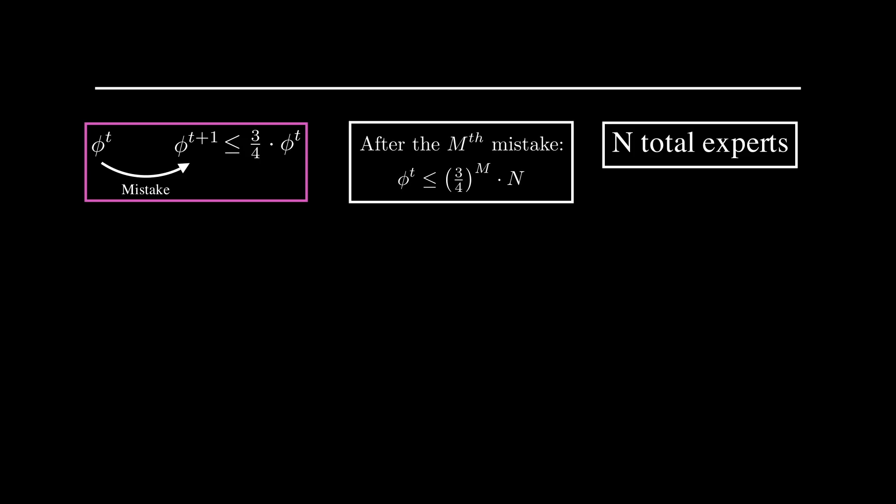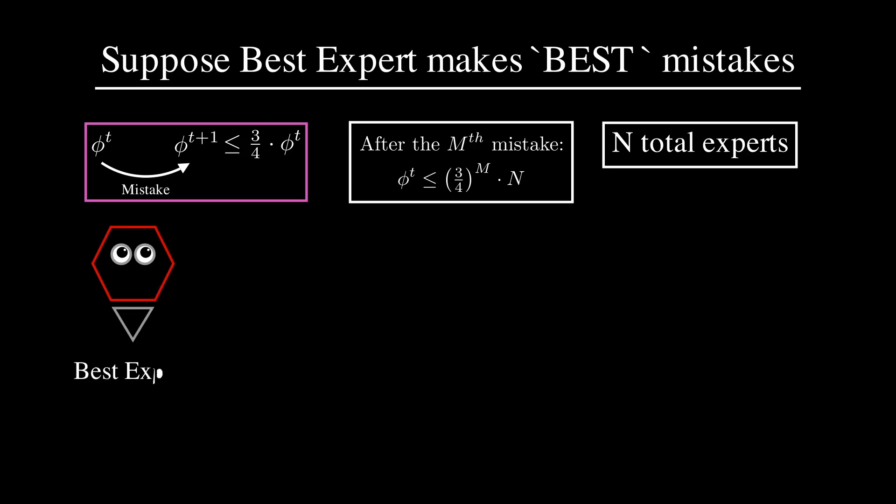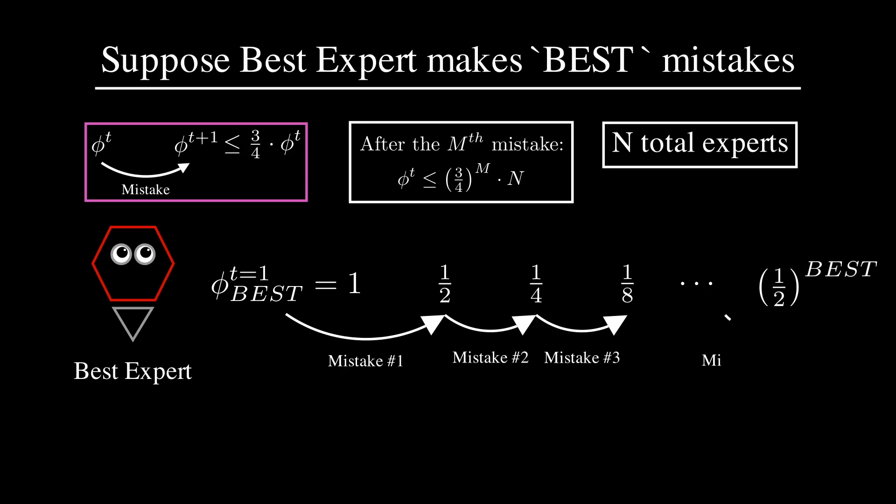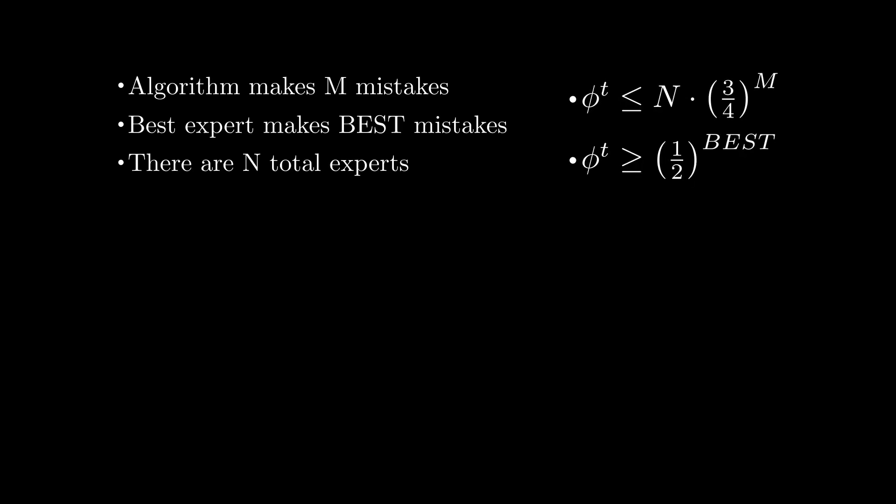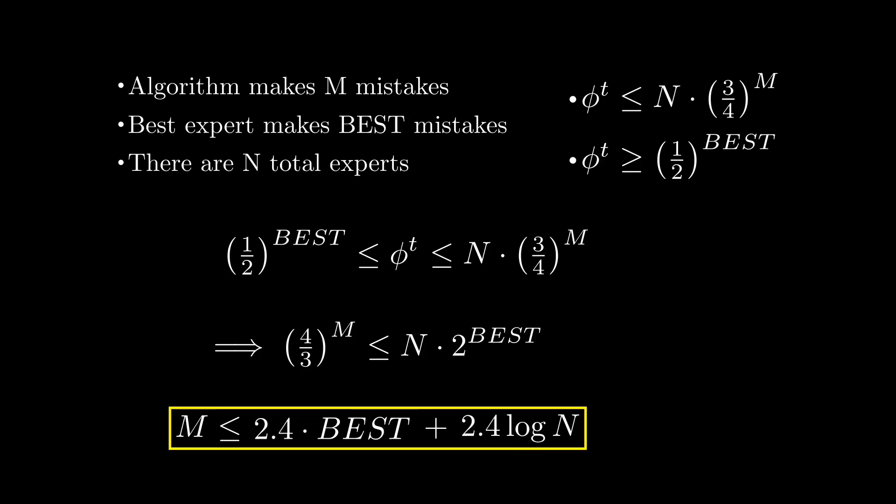How else can we bound phi_t? Let's compare the total trust to the trust we have for the best expert. Suppose the best expert makes a number of mistakes which we denote as best. Notice that the best expert starts with trust of phi equals 1, and each time it makes a mistake, phi halves. So 1 goes to 1/2, goes to 1/4, etc. Since we have defined the best expert to make best mistakes, its final trust must be one-half to the power of best. And since the total trust phi includes the best expert, we have phi_t is greater than or equal to one-half to the best. With our givens, we can combine the two bounds that we have on phi_t. And with a little bit of math magic, we get the following result: that the number of mistakes our algorithm makes is at most 2.4 times the best expert plus some small additive constant.